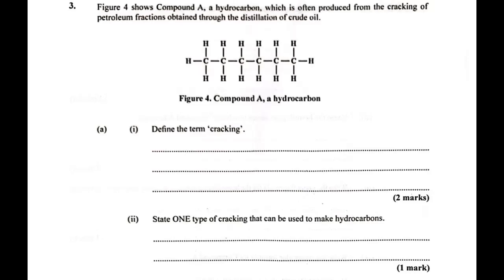The first question reads: This is from organic chemistry. Figure four shows compound A, a hydrocarbon, which is often produced from the cracking of petroleum fractions obtained through the distillation of crude oil. So it has six carbons and 14 hydrogens. That must mean something. But let's not preempt. Define the term cracking.